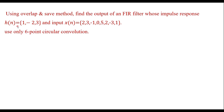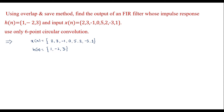In this video we will compute h of n using the overlap and save method. The x of n sequence is given as 2, 3, minus 1, 0, 5, 2, minus 3, and 1. The h of n sequence is given as 1, minus 2, and 3. Ls is the length of x of n which is equal to 8 samples. M is the length of h of n which is equal to 3. We are supposed to perform 6-point circular convolution, so N equals 6.